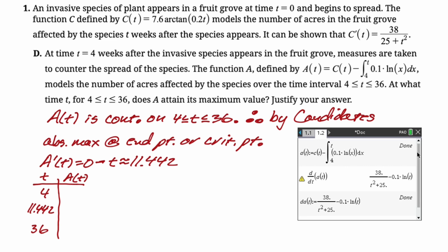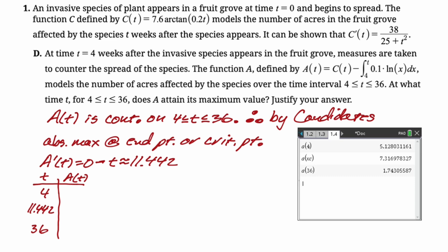So we got a critical point of 11.442, and we need to evaluate at 11.442. So I stored the value of T where A prime was equal to zero as XC. We evaluate A of T at all three of the points at 4, at 11.442, and at 36. And we get these values: 5.128, 7.317, and 1.743.